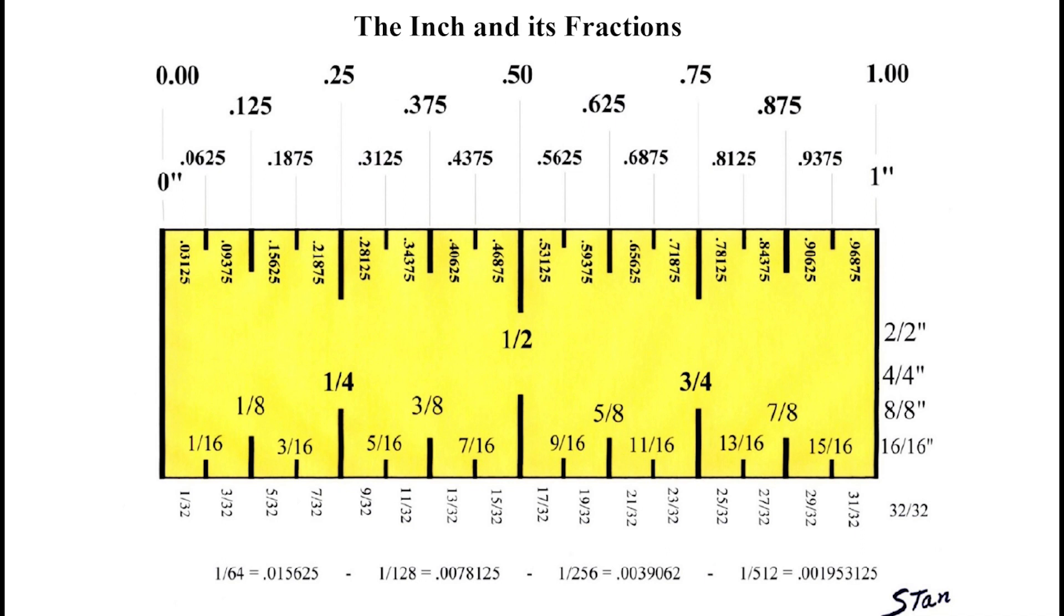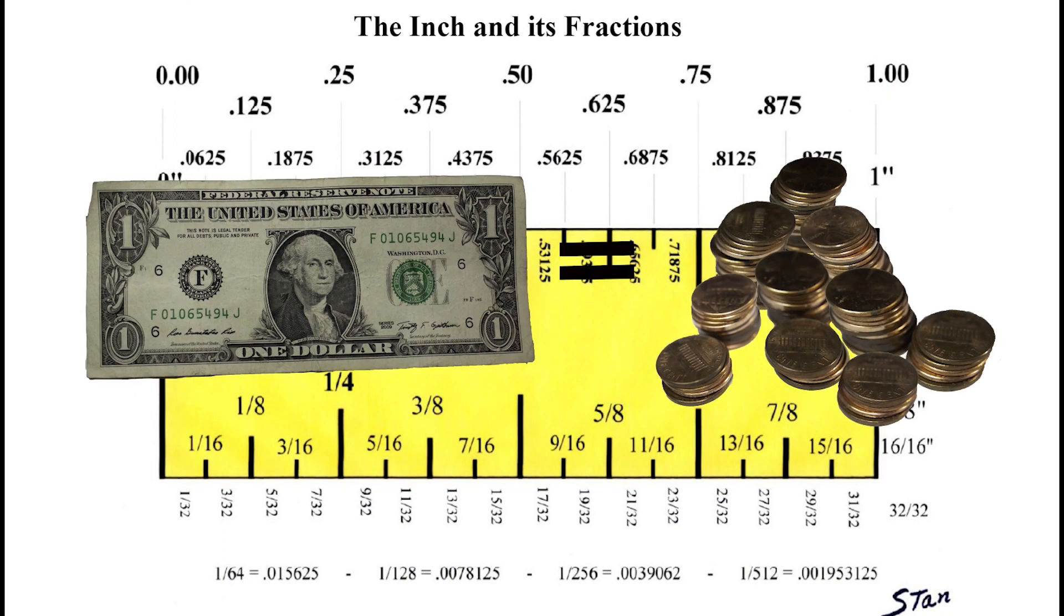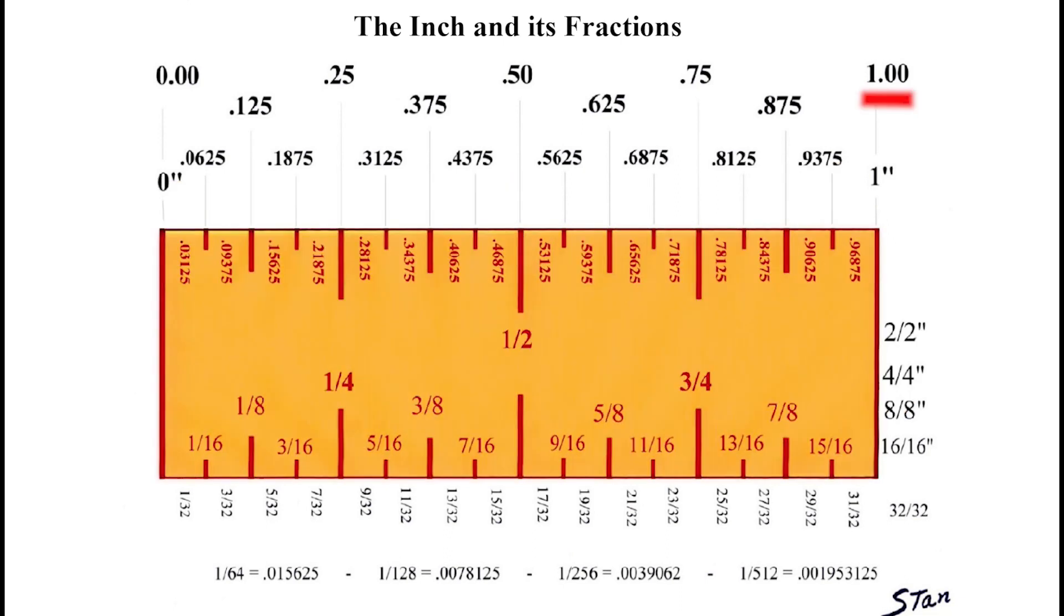Now, to be able to calculate stairs, balusters, and a lot more, you need to be able to convert the inch into hundredths. The inch being one or one point zero zero, like the dollar. One dollar equals one hundred pennies. Anyway, dividing one point zero zero by two, you get point five zero. One half equals point five zero.